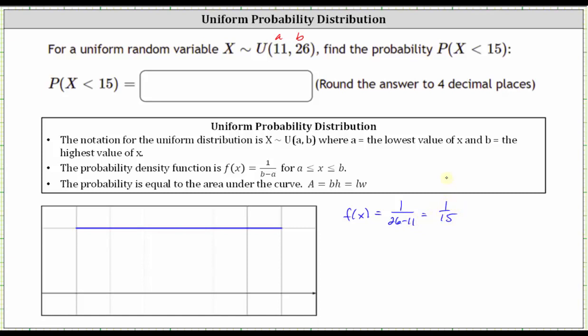This means if we form a rectangle using the horizontal line and the x-axis, the height is always going to be 1/15.